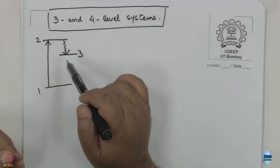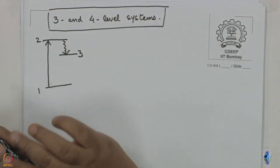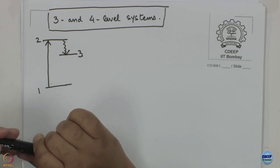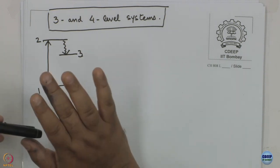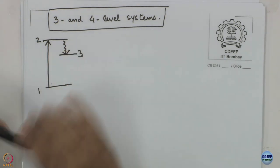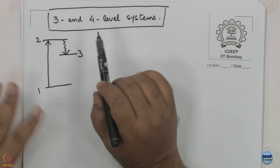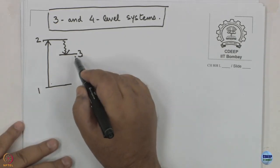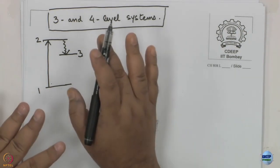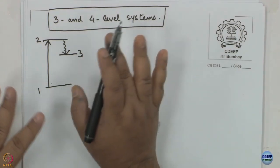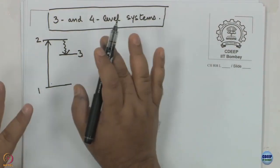A purist would say that when you invoke a heavy atom effect, you have spin-orbit coupling and it's no longer a pure triplet state. But the fact remains that it is not easy for the system to come back from three to one anyway. As we know, triplets have a long lifetime, so it is a sort of quasi-permanent state.